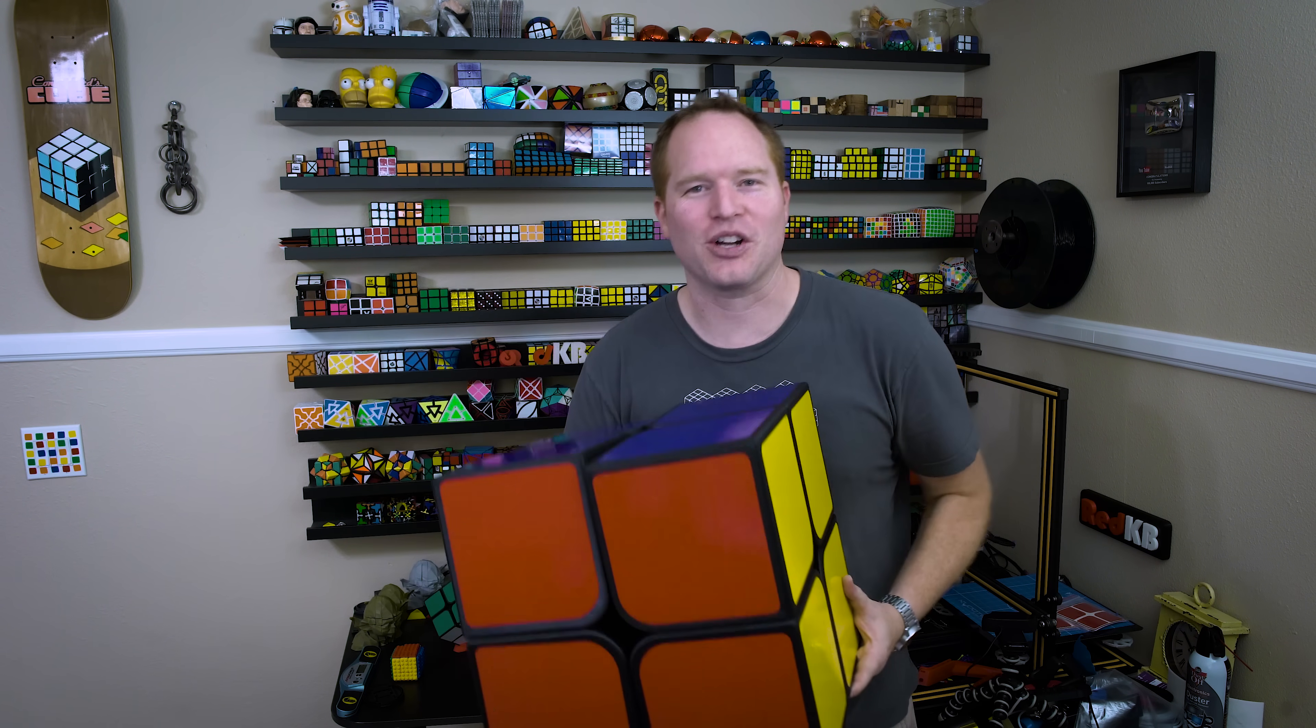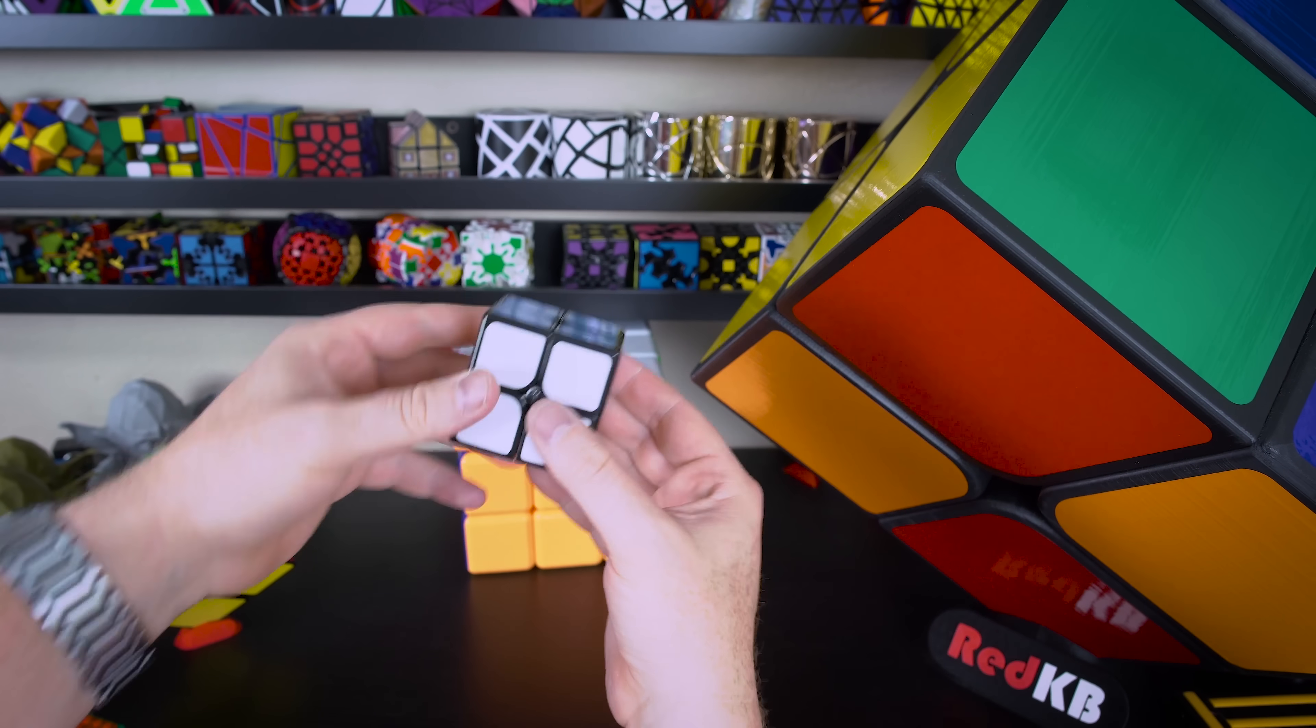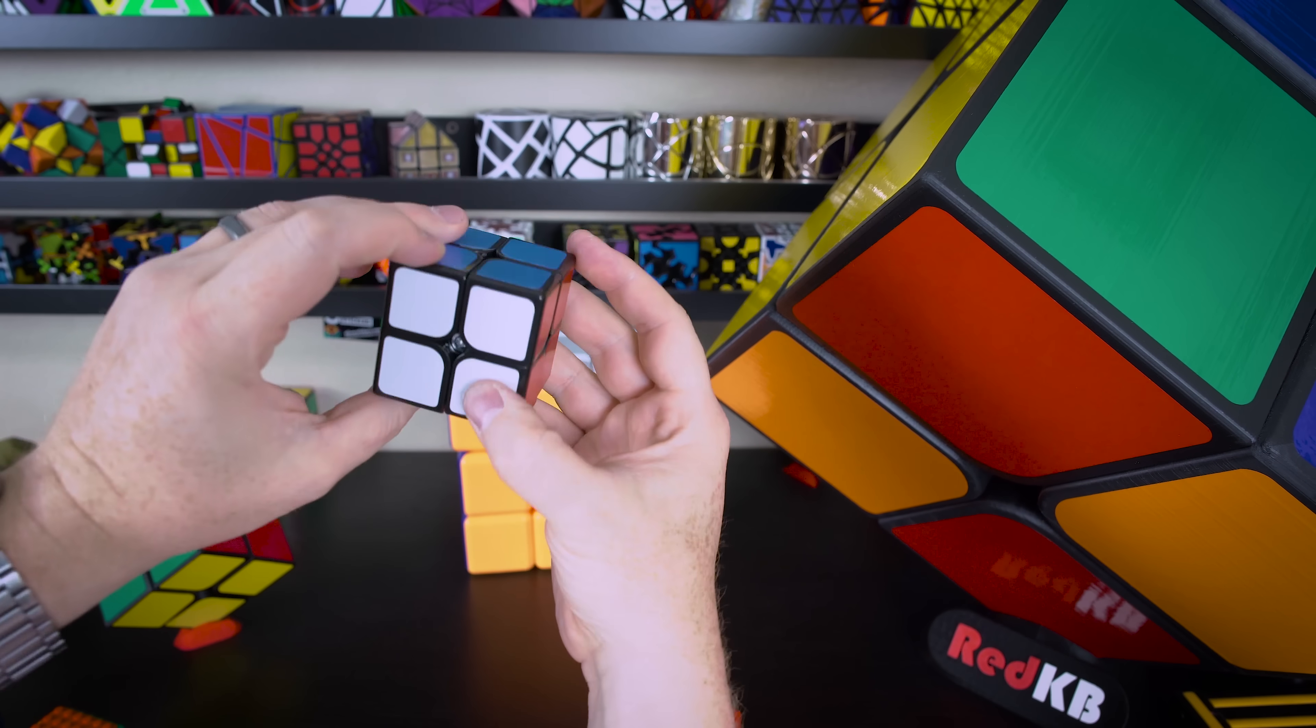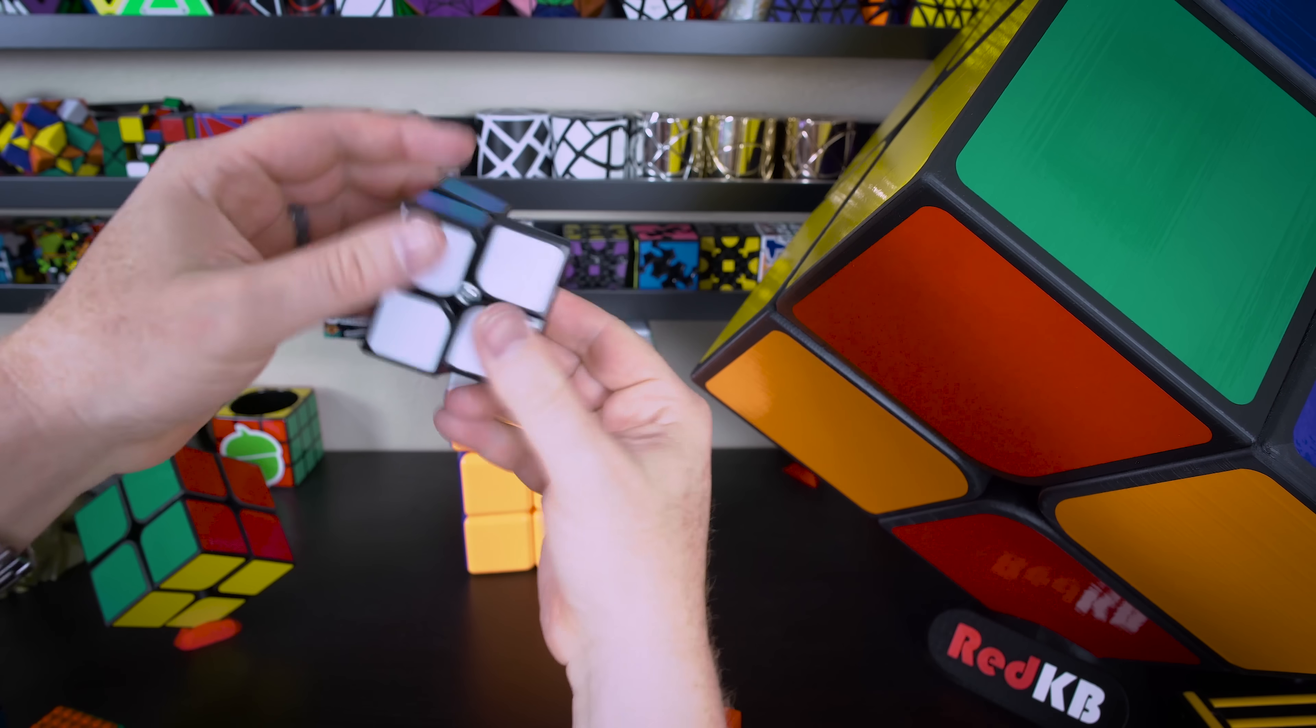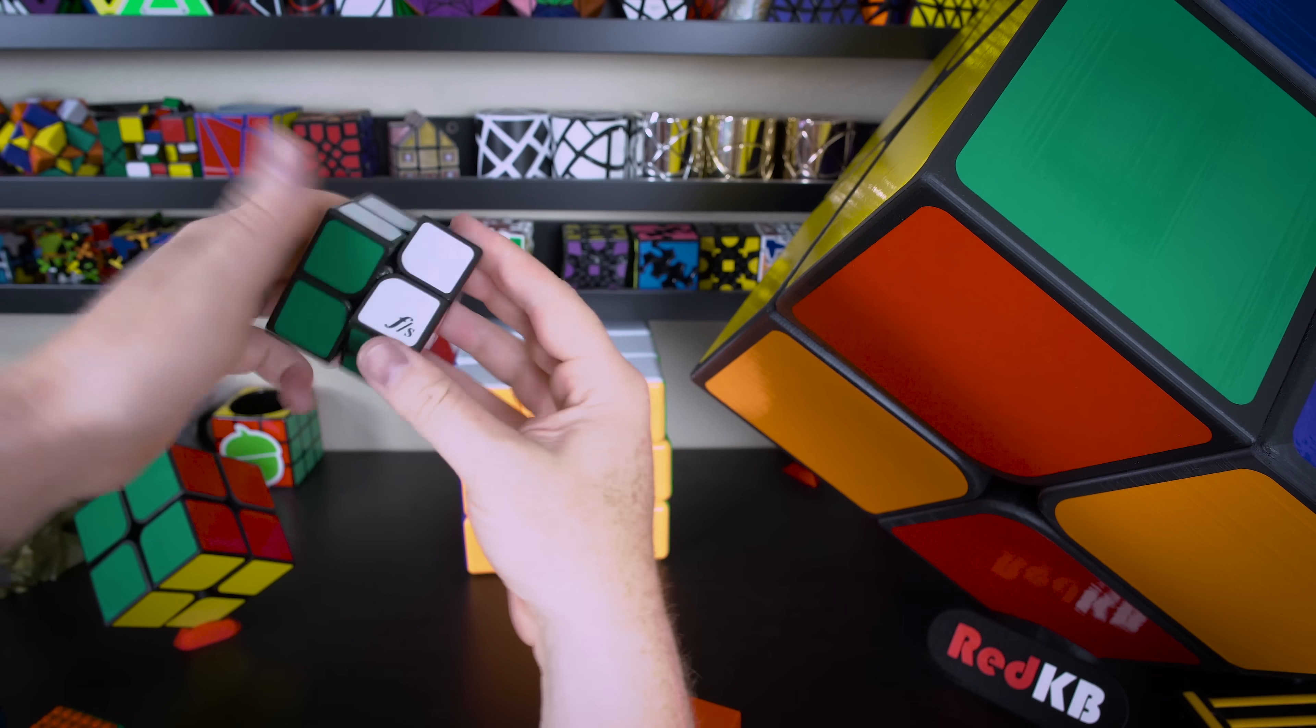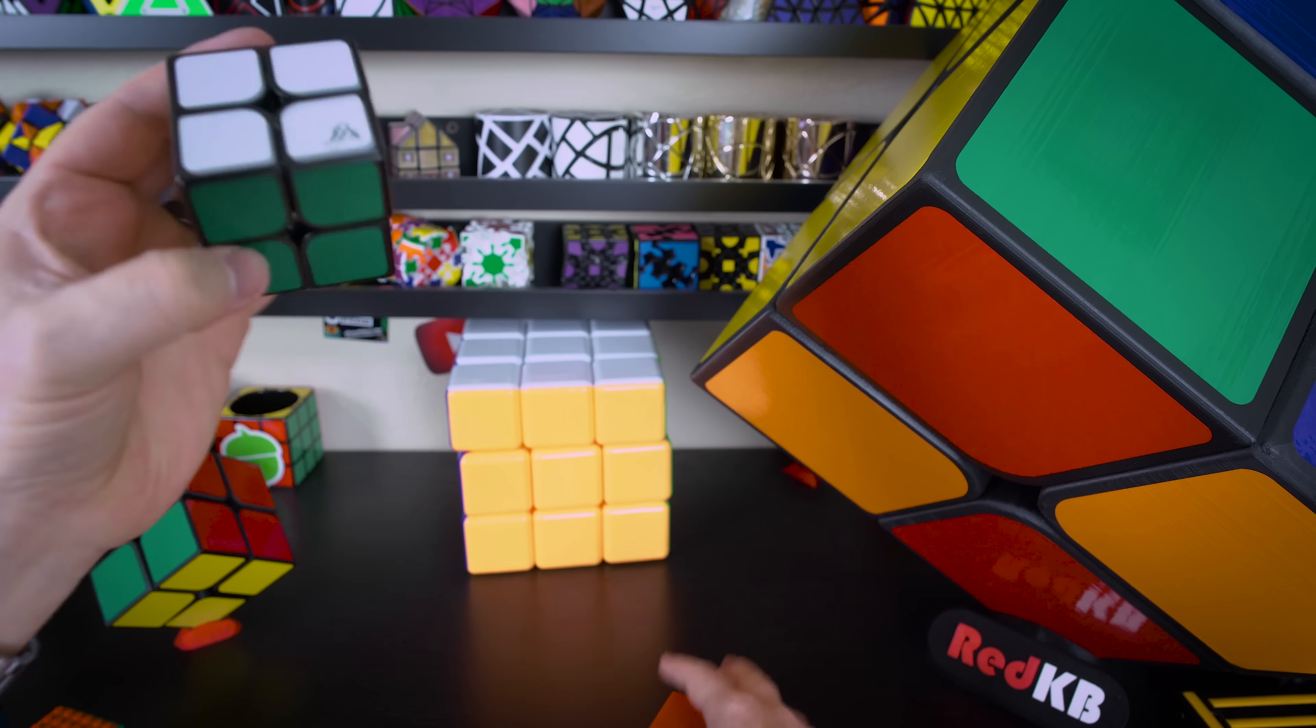So first I want to talk about the design of my giant 2x2 by starting with a normal size 2x2. Actually, this isn't a normal size 2x2, this is a large 2x2. It's a 55 millimeter 2x2 and most 2x2s are smaller than that. But this 2x2 and my giant 2x2 actually aren't very different. They're very similar in the way that they're designed.